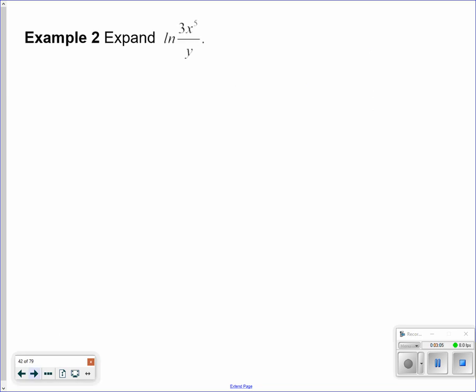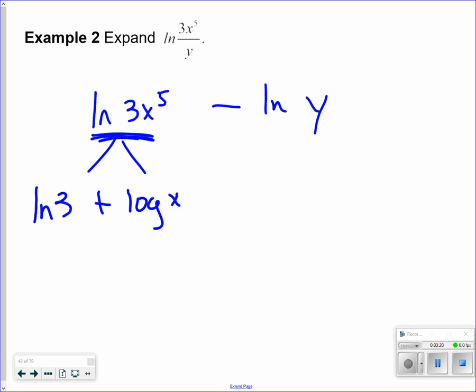So now I've got a division question. So I can do natural log of 3x plus 5, that's the top, minus natural log of y, that's the bottom. Now this one can go further now. I have natural log of 3 plus natural log of x to the 5th, and then natural log of 3 plus 5 times natural log, that should be an ln, not a log, natural log of x.